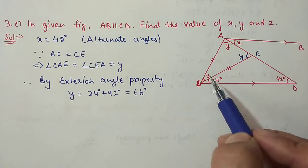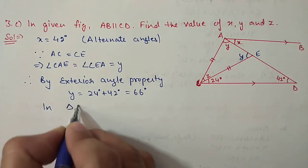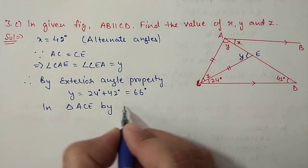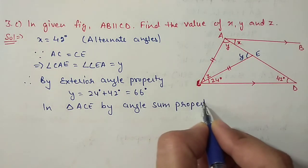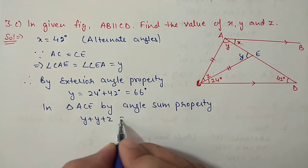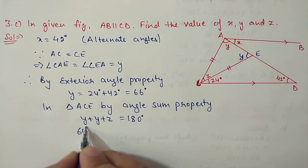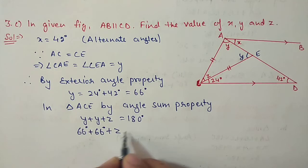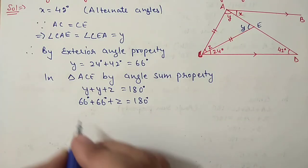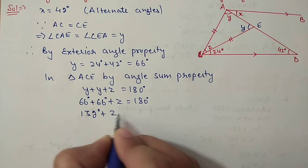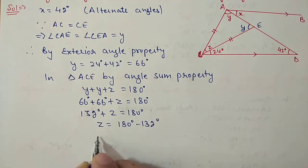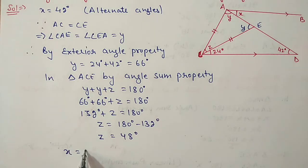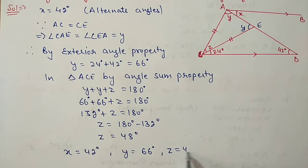Now in triangle ACE, using angle sum property to find Z: Y plus Y plus Z equals 180 degrees. Y is 66, so 66 plus 66 plus Z equals 180. Therefore 132 plus Z equals 180, and Z equals 180 minus 132, which is 48 degrees. So X equals 42 degrees, Y equals 66 degrees, and Z equals 48 degrees.